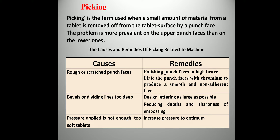The next defect is peaking. Peaking is the term used when a small amount of material is removed from the tablet surface by the punch face. The problem is more prevalent on the upper punch faces than on the lower punch. Causes and remedies related to machine: rough or scratched punch faces can cause peaking — some part of the tablet is picked up by the punch after compression. Polishing punch faces to have a luster and plating them with chromium to produce a smooth, non-adherent face can reduce peaking.